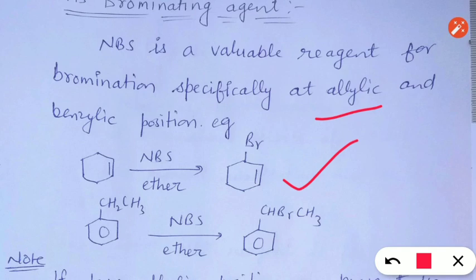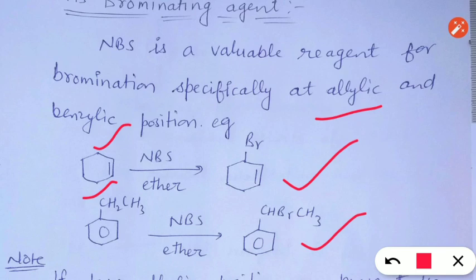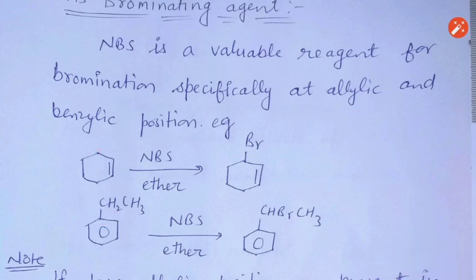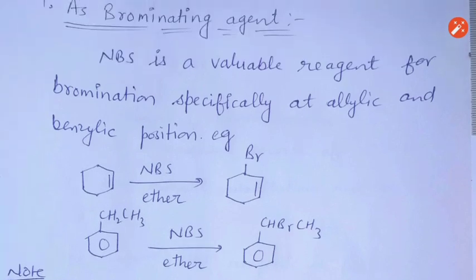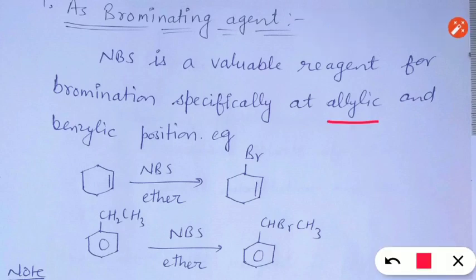In cyclohexene there are two allylic positions, both equivalent. In the second reaction, a benzyl compound is shown where bromination also takes place at the benzylic position. Now we will study why bromination with N-Bromosuccinimide generally occurs at allylic and benzylic positions, which will be explained through the reaction mechanism.